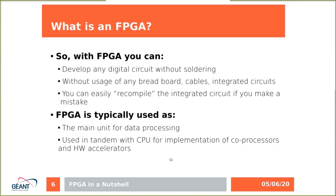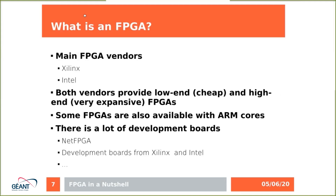If you need another hardware accelerator, for example for processing network data, you can swap the bitstream in the FPGA and customize it to make a different kind of hardware accelerator. The main FPGA vendors are Xilinx and Intel. Both vendors provide low-end and cheap FPGAs as well as high-end and expensive FPGAs. Some FPGAs are also available with ARM cores.